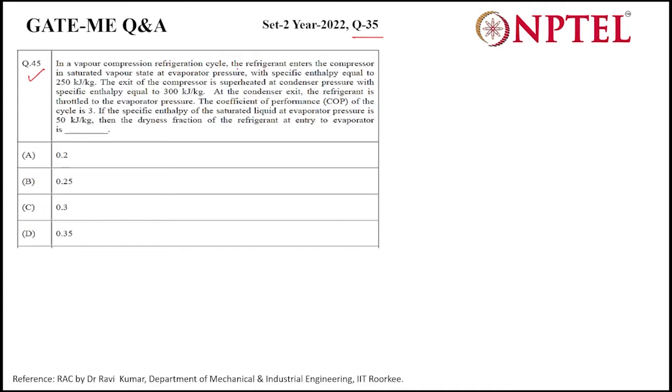In the RAC, the refrigerant enters the compressor in the saturated vapor state at the evaporator pressure. So we will draw the VCR cycle. Here is the first condition: from here it enters the compressor, then the condenser, then the expansion valve. Points 1, 2, 3, and 4. This is the evaporator.